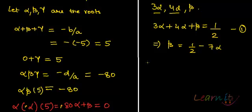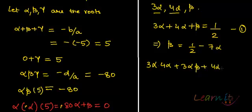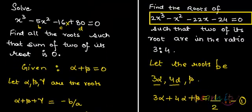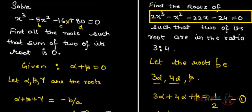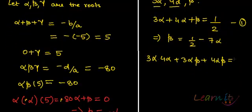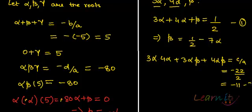The second condition involves the sum of the pairwise products: 3α·4α + 3α·β + 4α·β = c/a = -22/2 = -11. This gives us 12α² + 7αβ = -11.